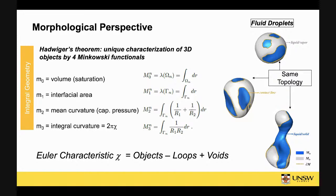These morphological measures show up as the basic state variables in our upscaled multi-phase flow models. The first Minkowski functional is essentially saturation, the second is specific interfacial area, and the third — mean curvature — can be related to the capillary pressure in the system through the Young-Laplace equation.